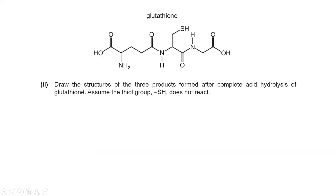Part two: draw the structures of the three products formed after complete acid hydrolysis of glutathione. Assume the thiol group does not react. In your syllabus from AS and A2 organic chemistry, you need to learn that two functional groups can undergo acid hydrolysis - one of them is amide, and another one is ester. Only these two.